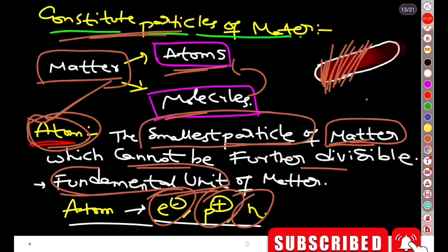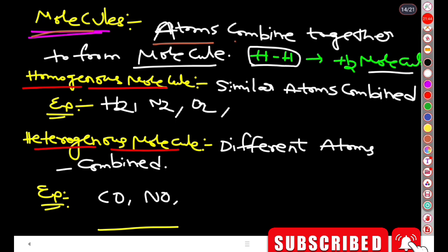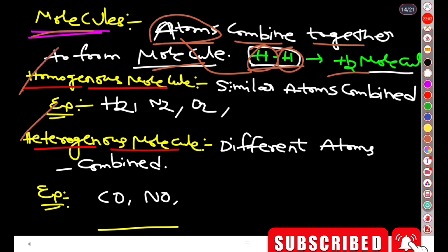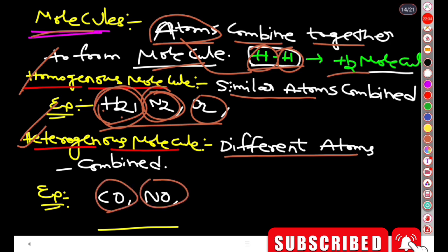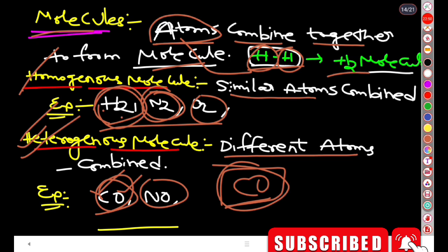We will discuss atomic structure further. What is a molecule? A molecule is formed when two or more atoms combine. Molecules can be homogeneous — formed from similar atoms — such as H2, N2, O2. Or they can be heterogeneous — formed from different atoms. For example, CO is formed from one carbon atom and one oxygen atom — two different atoms — making it a heterogeneous molecule.